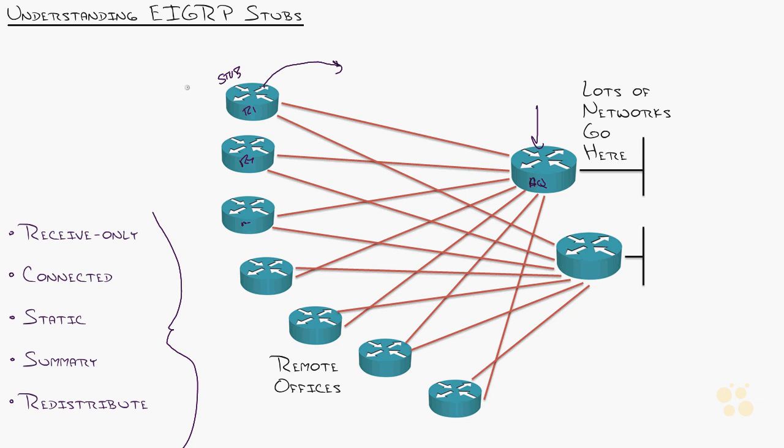By default, I mean, the command is very simple. EIGRP stub. There's not much more to it than that. By default, we'll go into connected and summary mode. What that does is say, router one, you are allowed to advertise your connected networks, this guy right here, and any summary routes. Like if maybe we have a whole bunch of connected networks and we want to do a summary back to the corporate office, then you can do that, but nothing else.